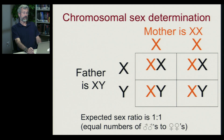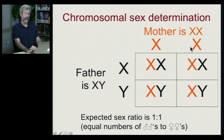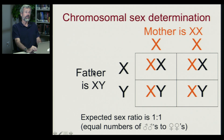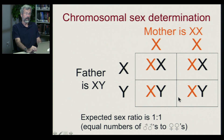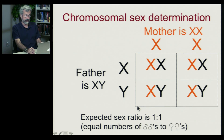First, chromosomal sex determination. The mother has two X chromosomes, so her eggs always produce a gamete with an X chromosome. The sperm of the father — half will have the X chromosome and half will have the Y chromosome. So we get an expected sex ratio of equal numbers of XX and XY offspring, meaning equal numbers of sons and daughters.